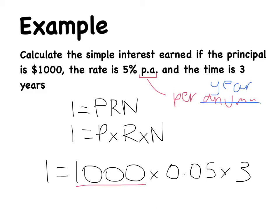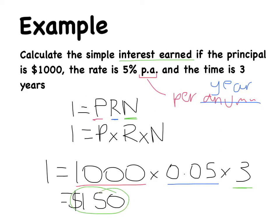So I equals P times R times N, and if I work that out, my answer is 150. What does that mean? The interest earned — so I can assume it's an investment — means that if I put $1,000 into a bank and the bank pays a simple interest rate of 5% per annum, and I leave it in there for 3 years, I will earn $150 on top of that $1,000. So at the end, if I pull it out, I will have $1,150. I would have earned $150 in interest.